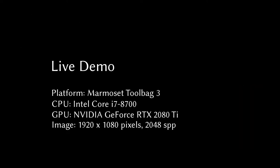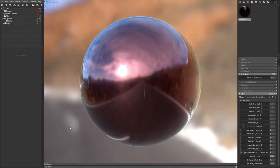Here is a live demo of our rendering system. The material is composed of two layers. The bottom layer is a metallic material, and the top layer is a transparent coating.